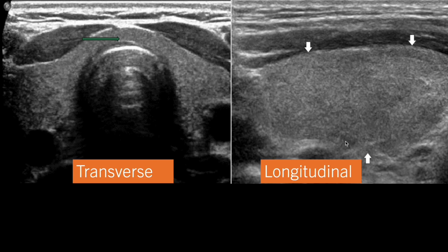This is the transverse view of the thyroid gland and this is the longitudinal view. The thyroid gland is made of two thyroid lobes connected by a midline isthmus. This is one thyroid lobe, this is another thyroid lobe, and they are connected by the isthmus, which is located in front of the trachea.